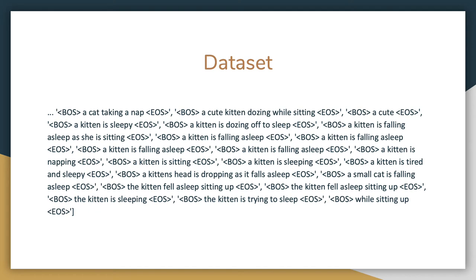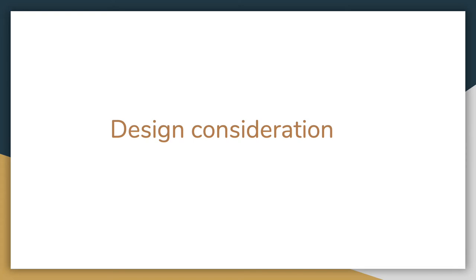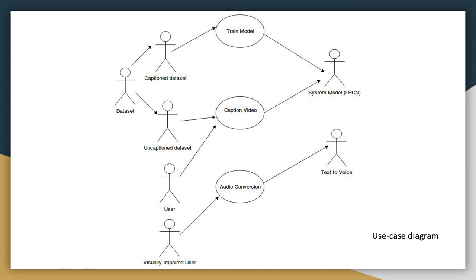The dataset is divided into two sets: training and testing. The training dataset is trained and then fed to the LRCN, whereas the uncaptioned dataset is used for testing, which is fed to the system later to check how accurately the system generates output for that video. The user can also upload any video to this model and get an output caption. It is also beneficial for visually impaired users because, through audio conversion, they can watch movies or clips and understand what's happening without having vision.